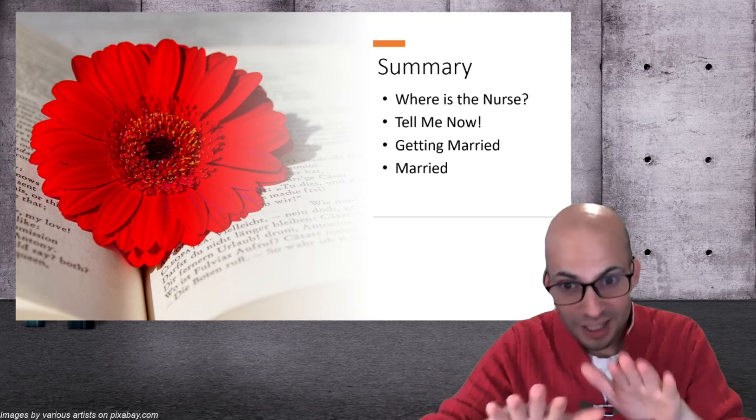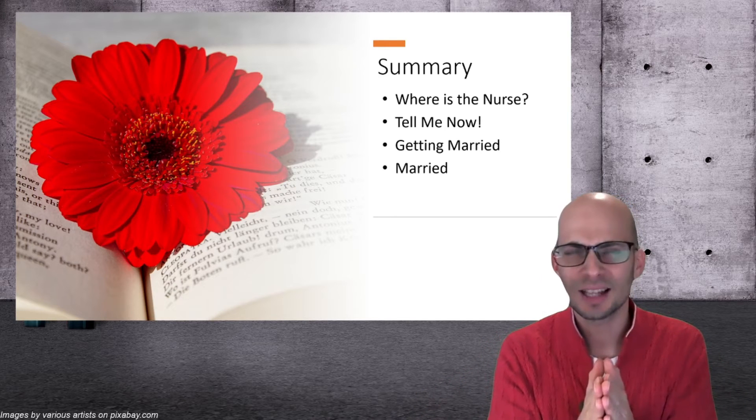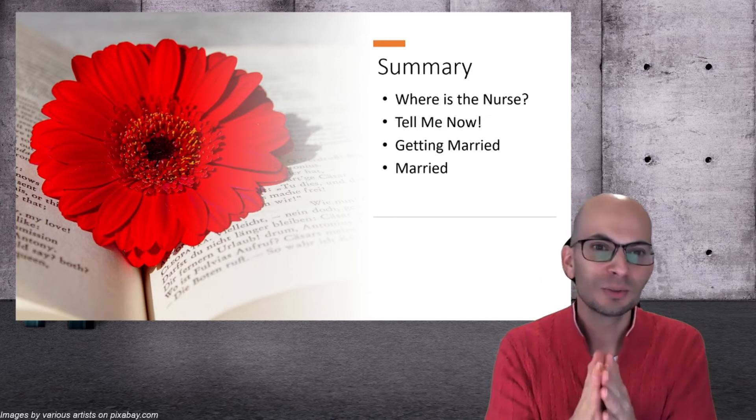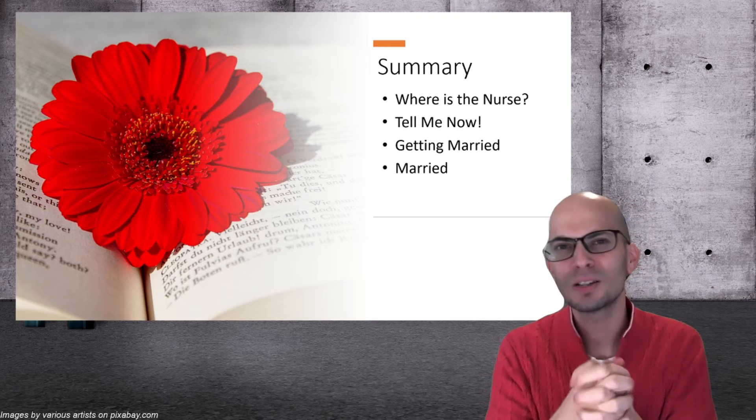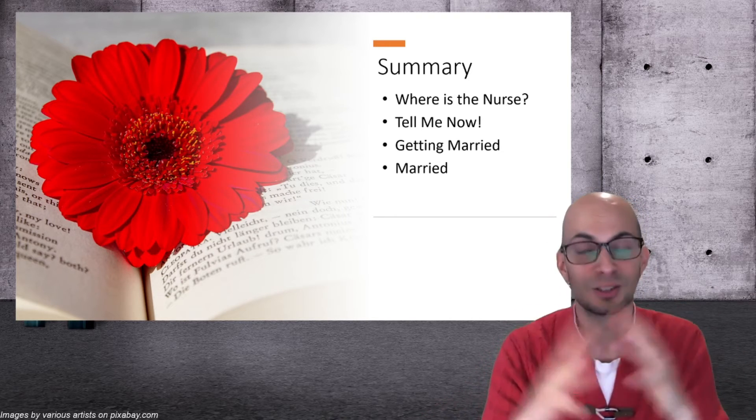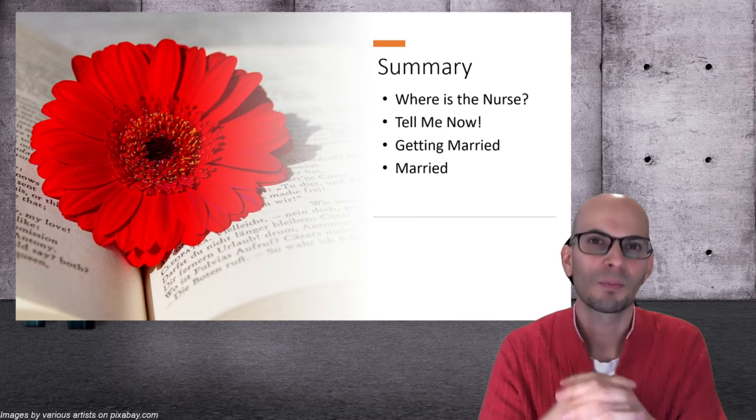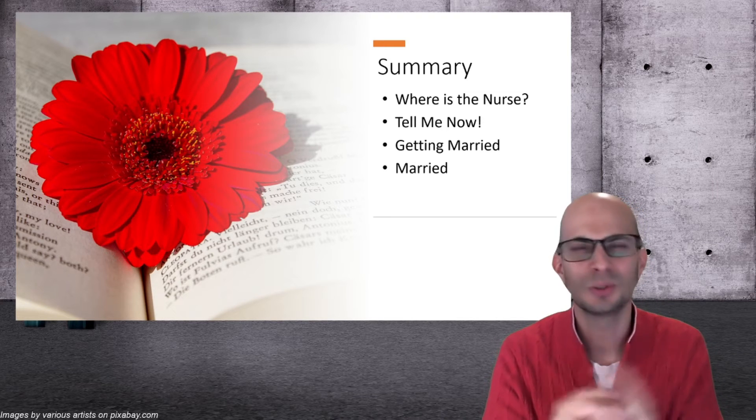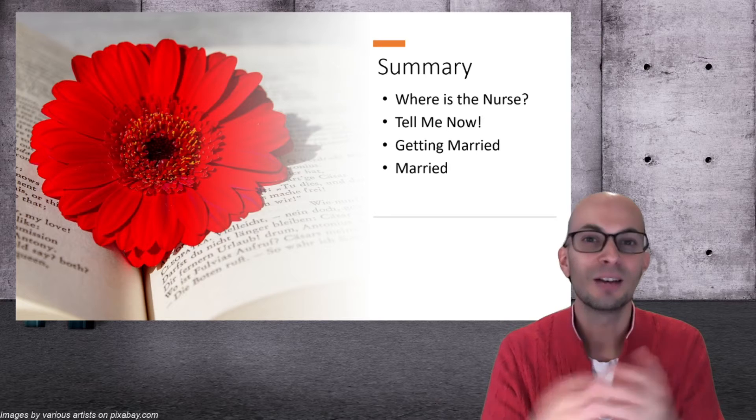And then Juliet comes in and Juliet's like, oh, Romeo. And Romeo is like, oh, I love you so much. My love is like this wide and this big. And he's kind of describing how great he loves her. And then Juliet's like, oh, those are just words. Love can't be described.